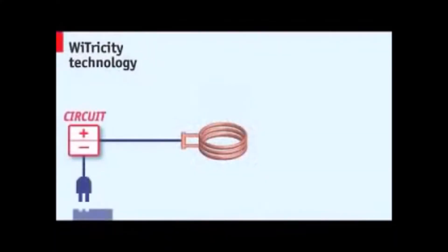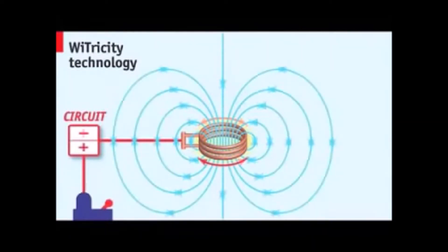The coils that WiTricity uses to transfer power wirelessly are magnetic resonators. First, a rapidly oscillating electric current is applied to a coil at its specific resonant frequency. This creates a magnetic field in the region around the coil.